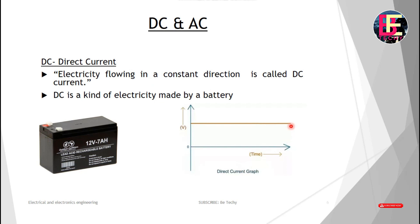Now let's look at DC and AC. DC is direct current and AC is alternating current. We use DC in many applications.